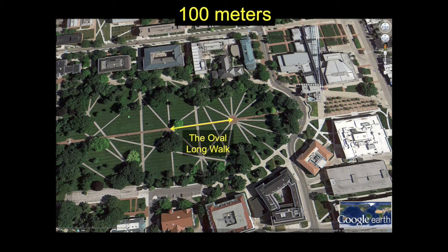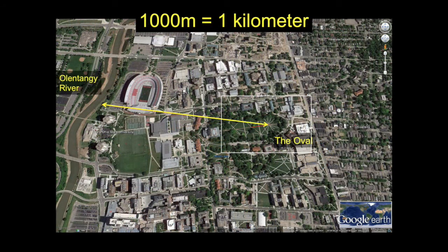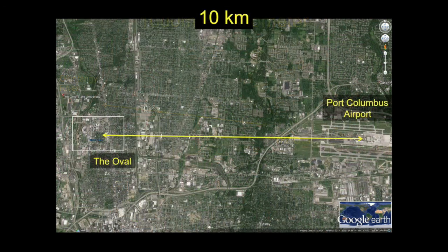We're now going to proceed out by powers of ten, looking at what scales we pick up with each factor of ten in distance. From a hundred meters, we go up to one thousand meters. At a thousand meters, we change our unit to the kilometer. One kilometer from where we were standing on the oval brings us to the shores of the Olentangy River, just a little bit west of the Ohio State University football stadium. The next factor of ten brings us to ten kilometers — about the size of a large city. Going east, we'd find ourselves at the front door of Port Columbus Airport, ten kilometers away.